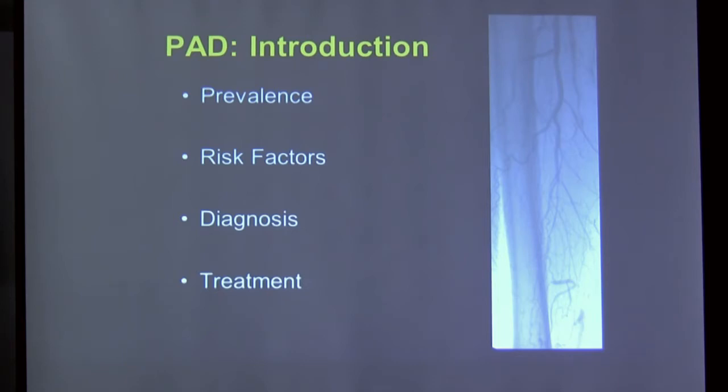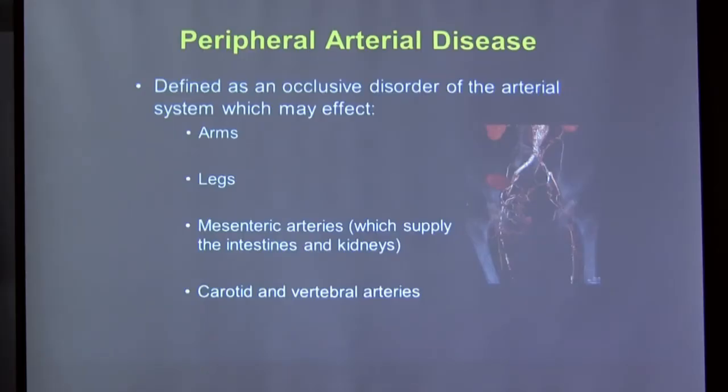So that's a brief background on vascular surgery and the basics of arteries and veins. Peripheral arterial disease, or PAD, is an occlusive disorder of the arteries affecting the arms and legs — ranging from partial narrowings to complete blockages. It can also affect the mesenteric arteries supplying the intestines, the kidney arteries, and the carotid and vertebral arteries that supply the brain, potentially leading to stroke or mini-stroke.